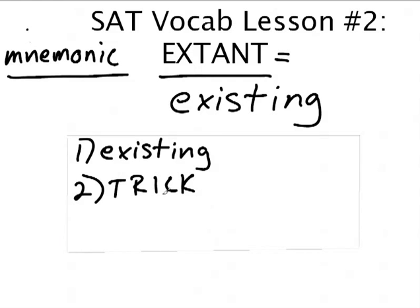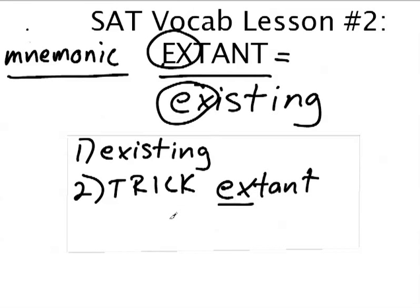Now, getting back to the trick, most students when they first make a trick for extant and they know that it means existing, they kind of hop on the most obvious part of these two words, which is the E-X similarity there. So they'll say, okay, well, extant has an E-X and so does existing. And there's their trick. Right?